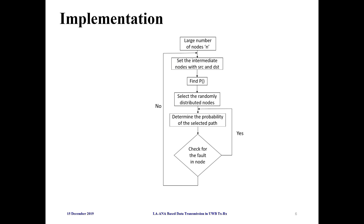My complete implementation starts with taking a large number of nodes in a simulated environment, setting the intermediate nodes with source and destination randomly, then finding the probability of occurrence of each node within that route and selecting the randomly distributed nodes. If the probability of the selected path is determined, then the transmission happens and a check for fault in the node is performed.